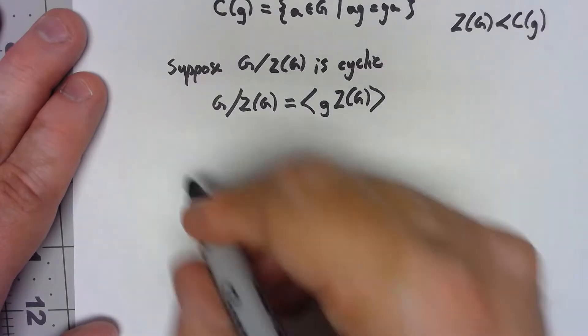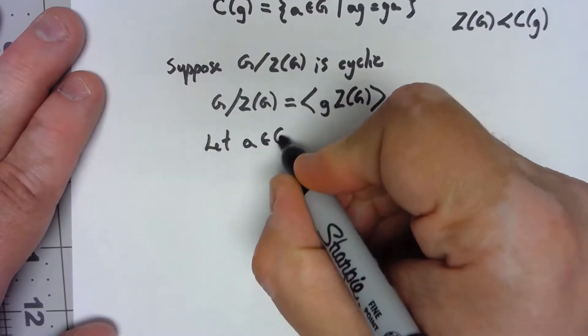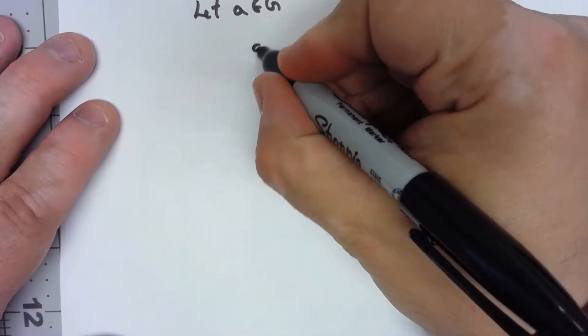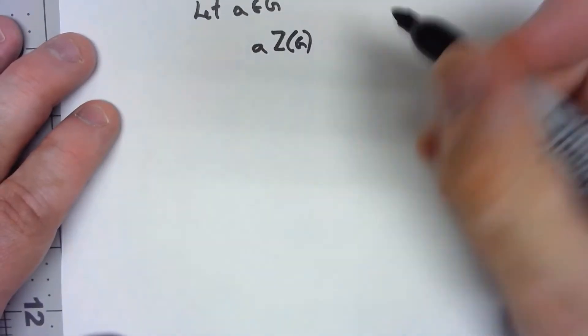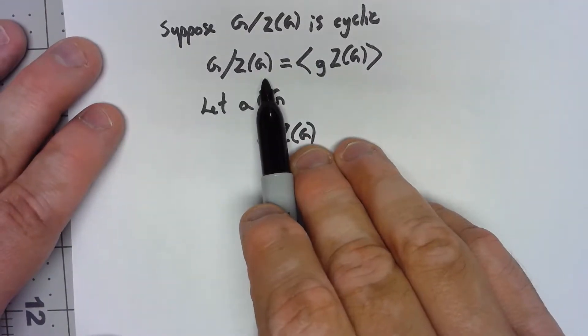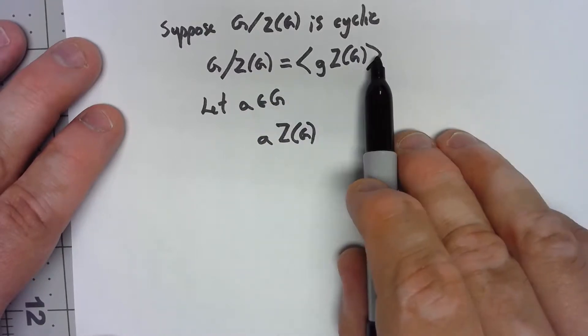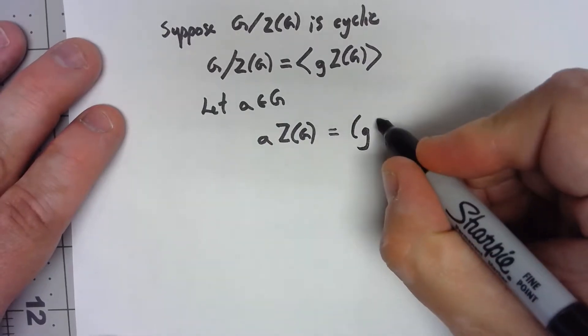Now let's let A be any element of G. Now if we look at the coset then, A Z(G), well all the cosets are part of this factor group and we're saying that that's equal to the cyclic subgroup generated by this, so that must be G Z(G) to the i.